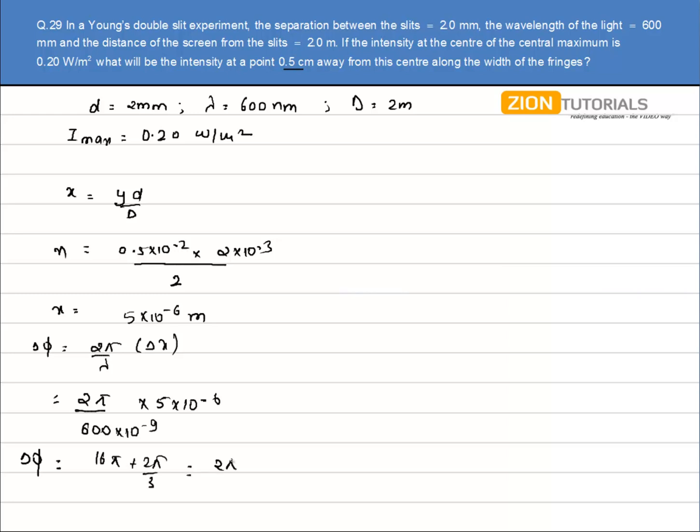It can be written as 2π by 3 because the 16π will result into the same phase as 2π by 3.